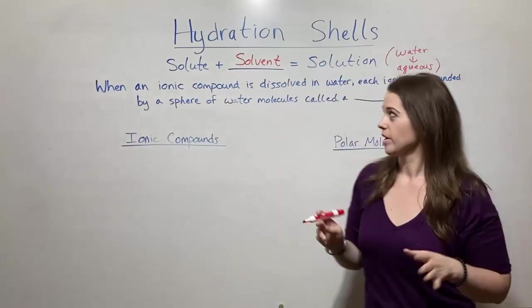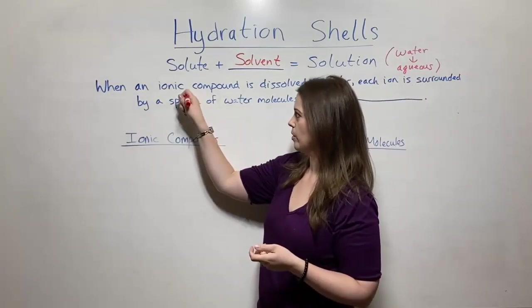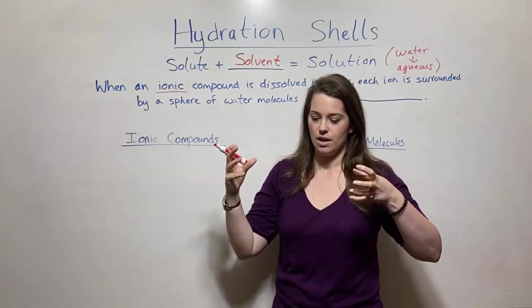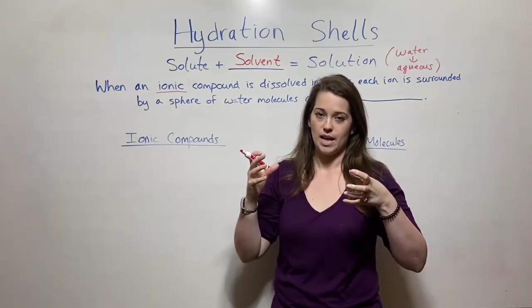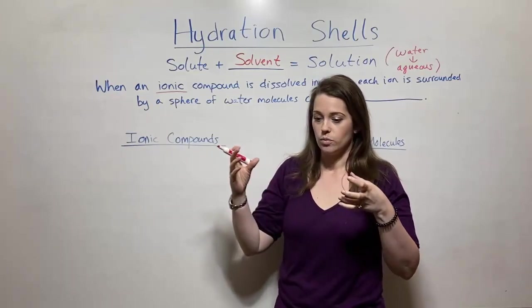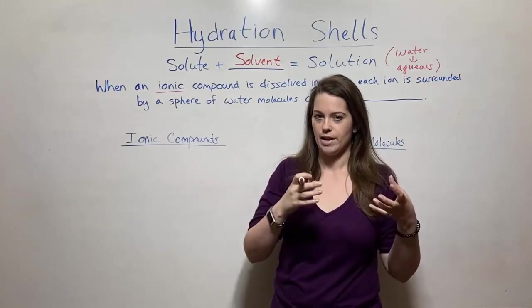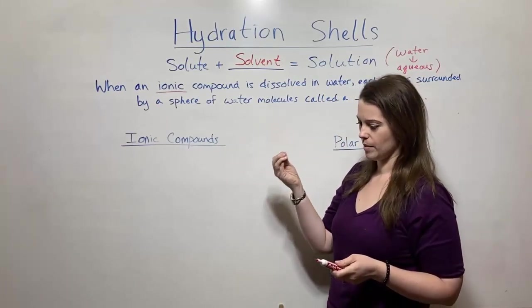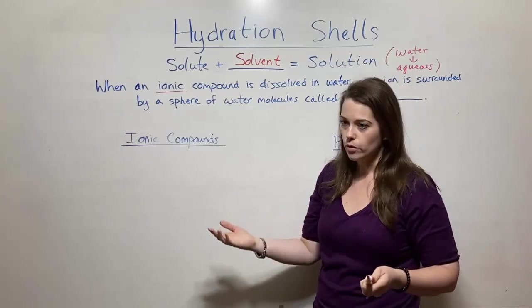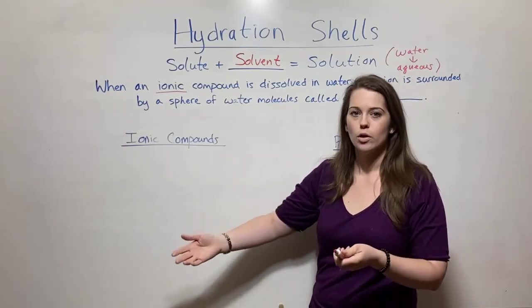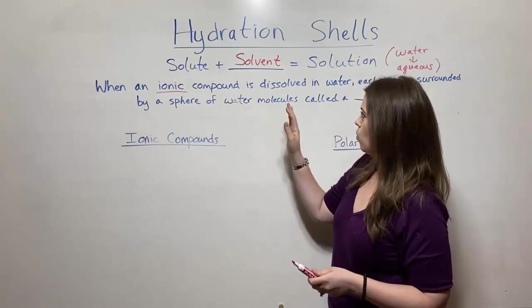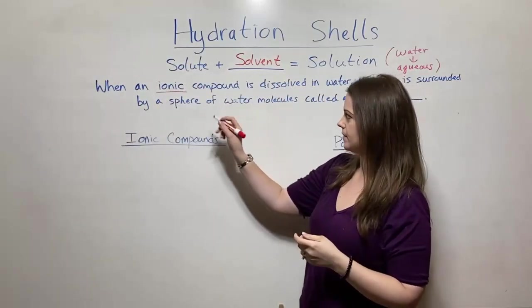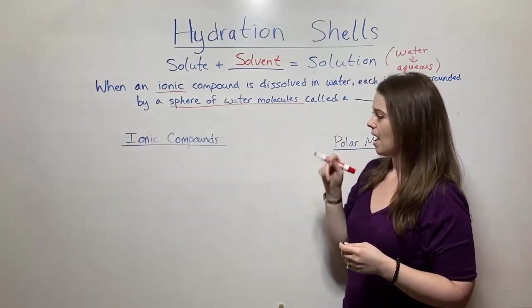So that brings us to hydration shells. When an ionic compound — remember ionic is talking about when you have a positively charged atom and a negatively charged atom, and those positive and negative charges are attracted to each other and that forms an ionic bond — an electron is transferred: lost from one atom and gained by another, creating the positive and the negative. When you have some kind of ionic compound, something like sodium chloride or potassium fluoride or magnesium chloride, when they are dissolved in water, each of those ions is surrounded by a sphere of water molecules. And this is called a hydration shell.